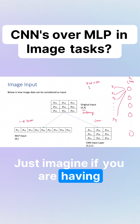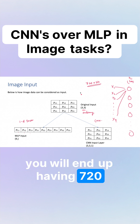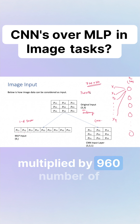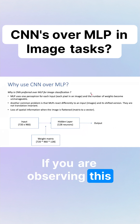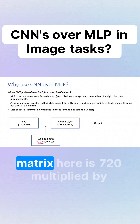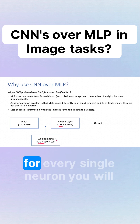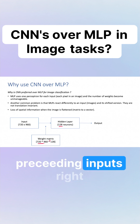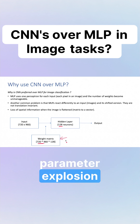Just imagine if you have an input image of 720x960 — you will end up having 720x960 number of weights. If you observe this particular slide, the weight matrix here is 720 multiplied by 960 multiplied by 128, because for every single neuron you will have connections from all the preceding inputs. So obviously, there is a parameter explosion.